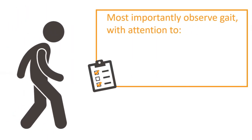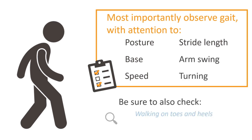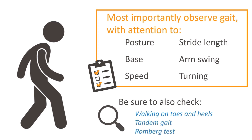Most importantly, we should observe his walking with attention to his posture, base — how far apart his feet are — speed, size of his steps (known as stride length), arm swing, and turning. Be sure also to check walking on toes and heels, tandem gait, and assess for the Romberg test.